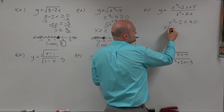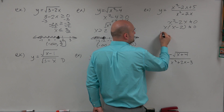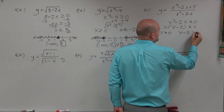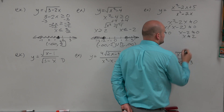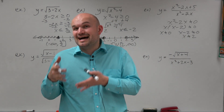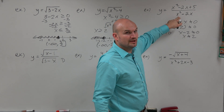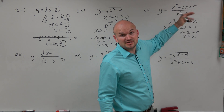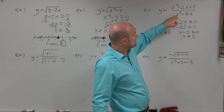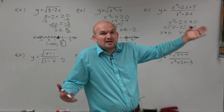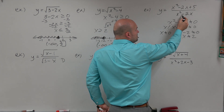So what I'm going to do is factor out an x and have x times (x minus 2) cannot equal 0. Then I can apply the zero product property: x cannot equal 0, and x minus 2 cannot equal 0. Therefore, x cannot equal positive 2. The reason x cannot equal 0 and x cannot equal 2 is that when you plug in 0, you make the denominator equal to 0: 0 squared minus 2 times 0 is 0. When you plug in 2: 2 squared is 4, minus 2 times 2 is 4, and 4 minus 4 is 0.